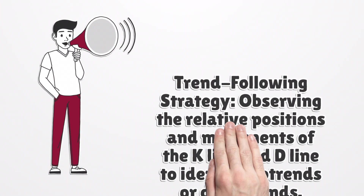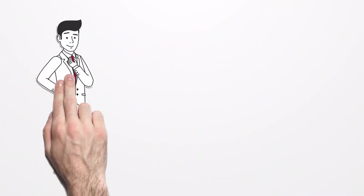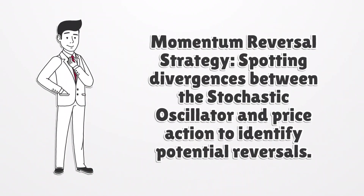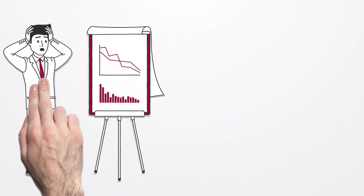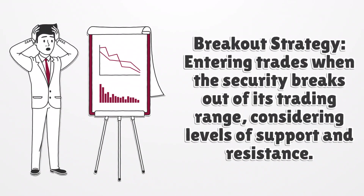The trend following strategy involves observing the relative positions and movements of the K-line and D-line to identify uptrends or downtrends. The momentum reversal strategy involves spotting divergences between the stochastic oscillator and price action to identify potential reversals. The breakout strategy involves entering trades when the security breaks out of its trading range, considering levels of support and resistance.